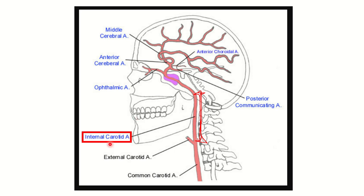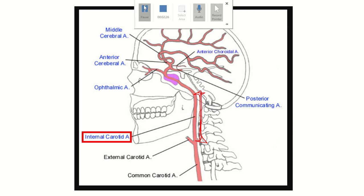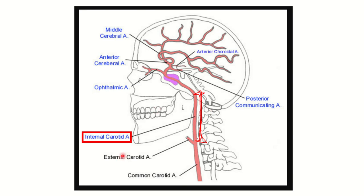The internal carotid artery gives no branches in the neck — this is the key point for answering this question. It arises from the common carotid artery, runs along the neck without giving any branches, then enters the cranial cavity where it gives off its branches.